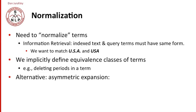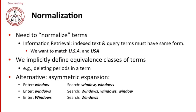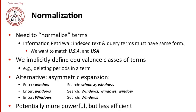An alternative is some kind of asymmetric expansion. For example, if I enter the term 'window,' I might want to search for window, windows, or any morphological variant. But if I enter capital-W 'Windows,' I might only want to search for capital-W Windows because the person is presumably looking for the product and not the part of your house. This is a potentially more powerful algorithm, but less efficient and much more complicated. So in general, we use symmetric and relatively simple expansions.